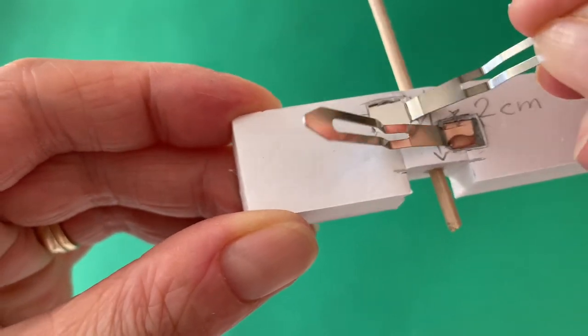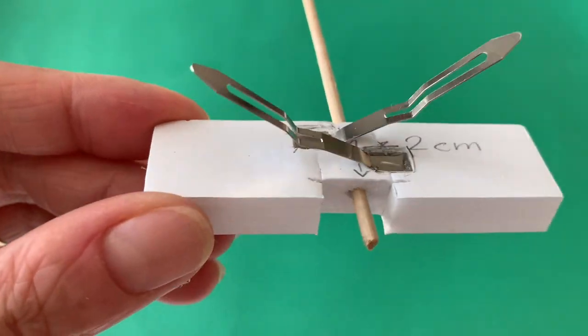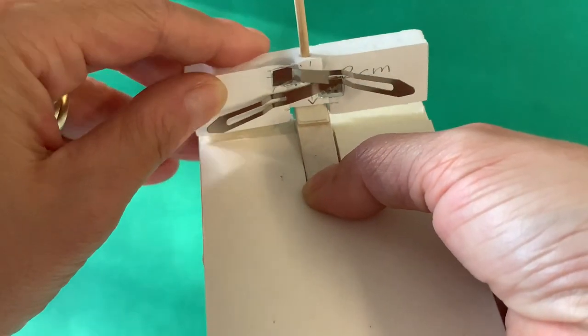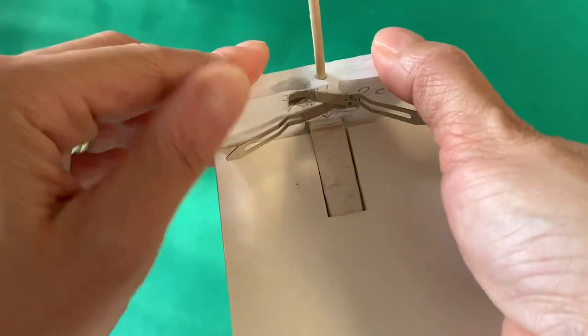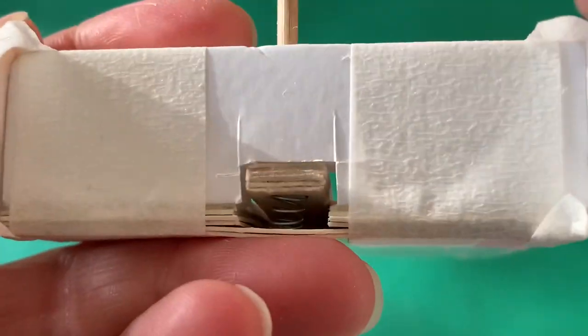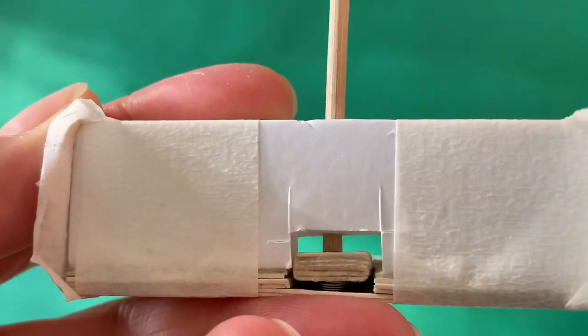Attach the stopper to the back of the base. Test the placement of the pin to ensure it compresses the spring under the catcher element.